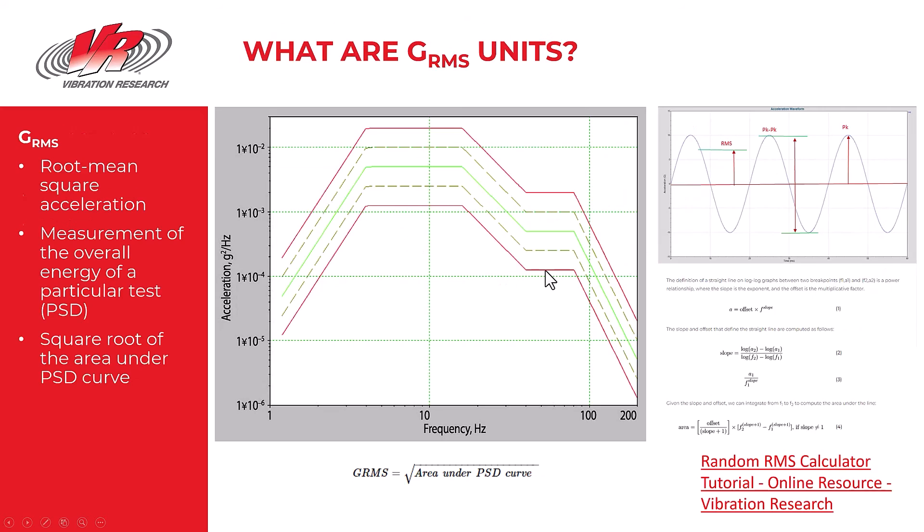But another value that's very meaningful to test engineers is the unit called GRMS. What are GRMS units and how do we obtain them? As I've mentioned already, in a pure sine wave the RMS value or the GRMS value is the peak value divided by the square root of 2, or 0.707 times the peak value.